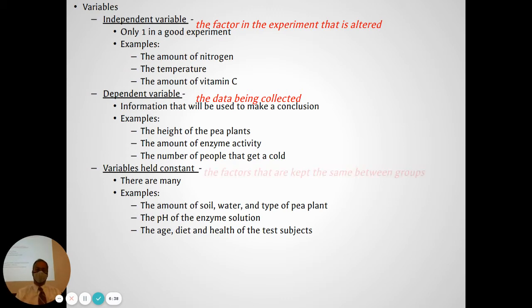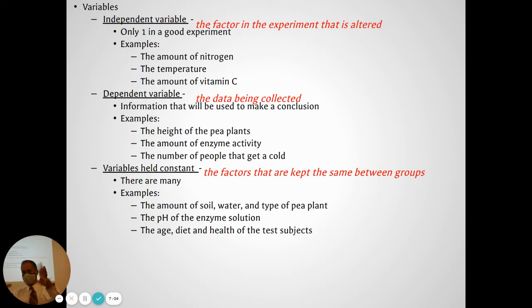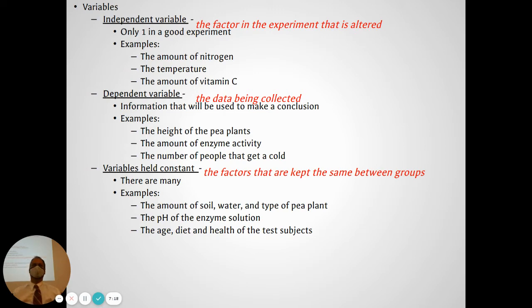Then we have a whole bunch of other variables called variables held constant. If I'm trying to make only one thing different in my groups, there must be a whole bunch of things I'm trying to keep the same. In those plants, I gave one more fertilizer than the other, but I need to keep the type of soil the same, the amount of water the same, the temperature — all those other things. If those are different, I won't know whether plants grew taller because of the fertilizer or some other factor.